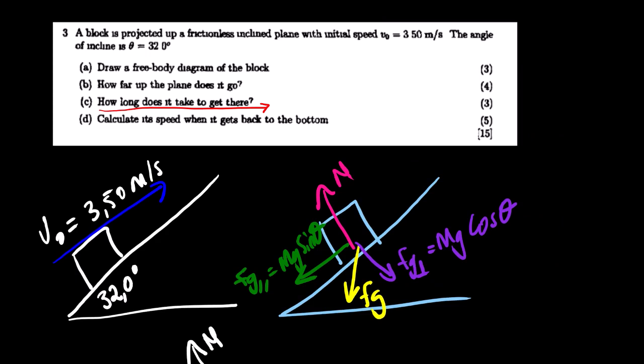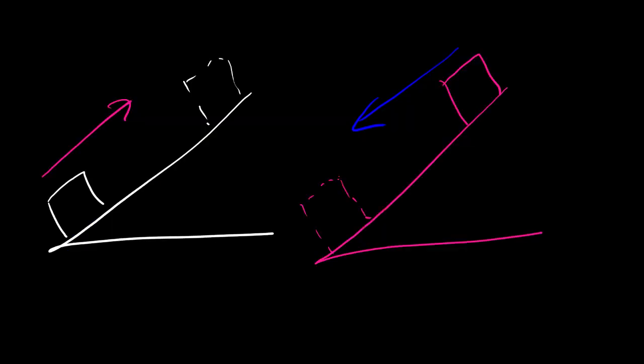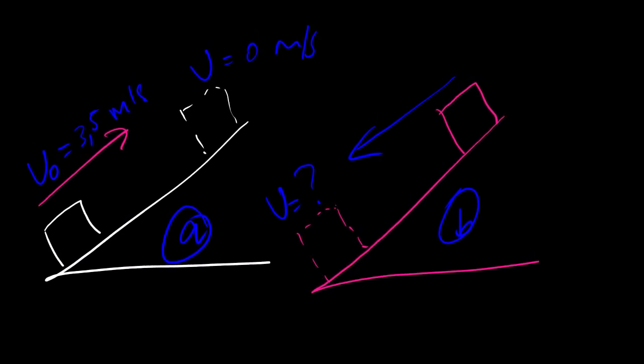Our next question says, calculate its speed when it gets back to the bottom. We are here. So the question requires us to calculate the velocity at this point. We know that as it goes up the initial was 3.5 meters per second. Final, it's 0 meters per second. And then when it goes down, our initial velocity will be 0 meters per second. Then we're looking for this velocity.